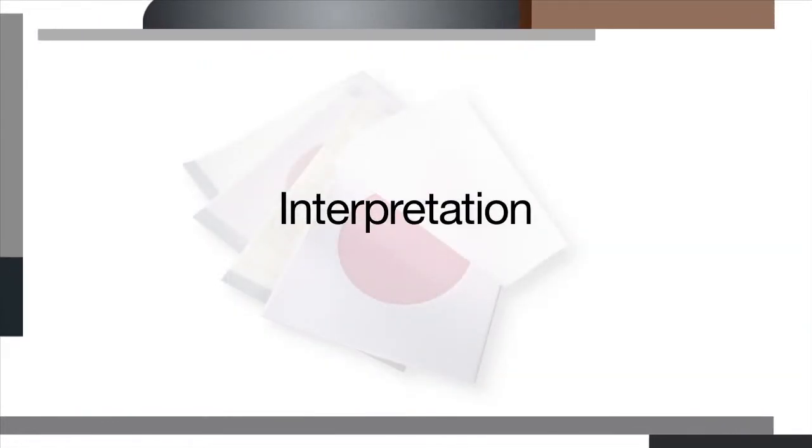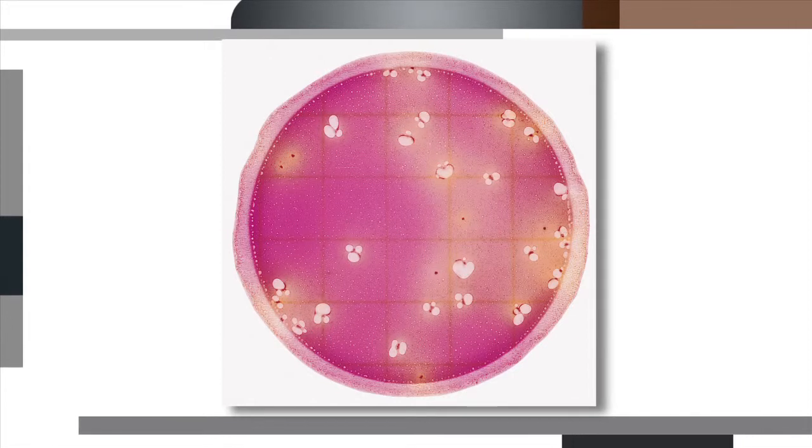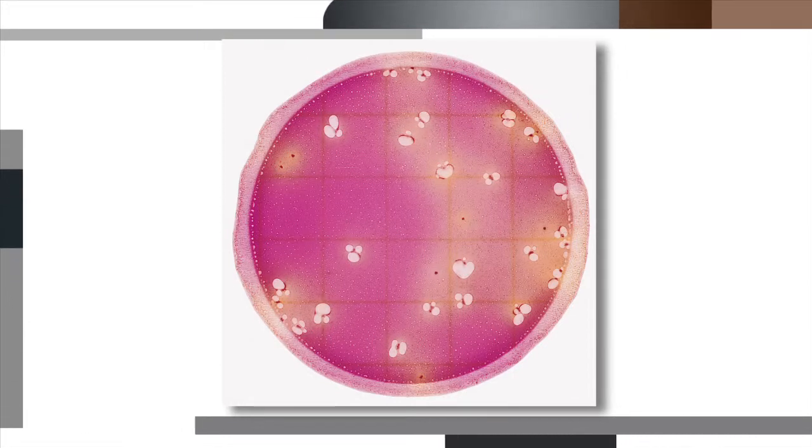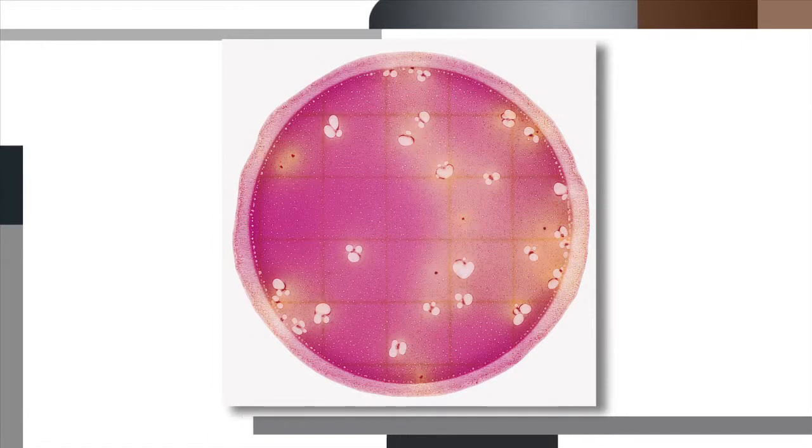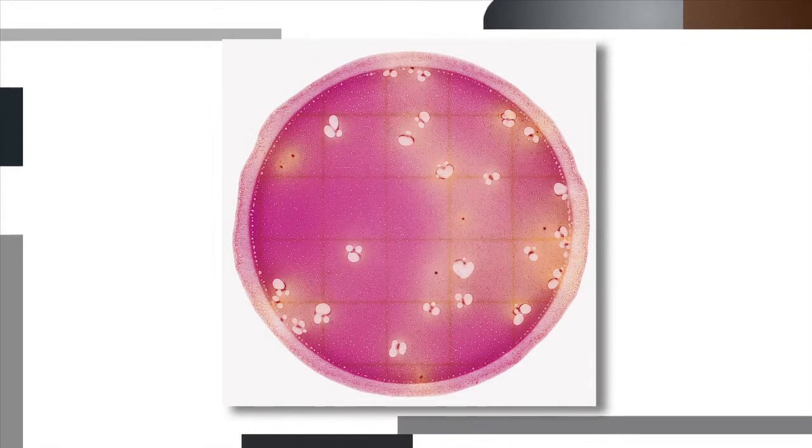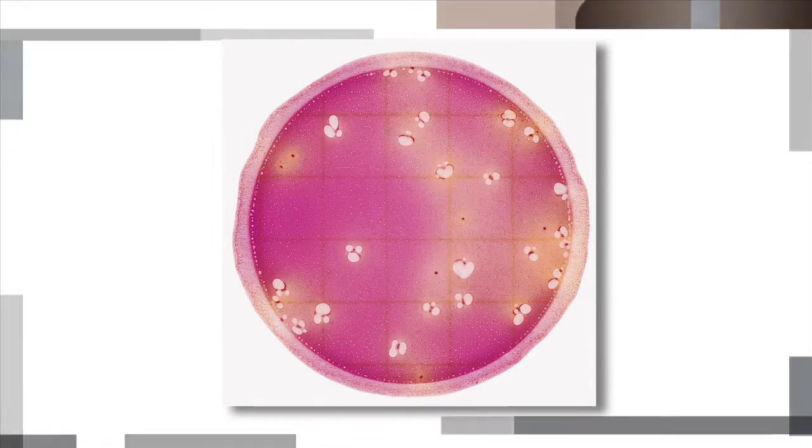The next step in microbial testing is interpretation. 3M PetriFilm Enterobacteriaceae count plates have indicators to assist you in interpreting the plate. An indicator dye in the plate colors the colonies red. The top film traps gas produced by some bacteria and the pH indicator detects acid production.